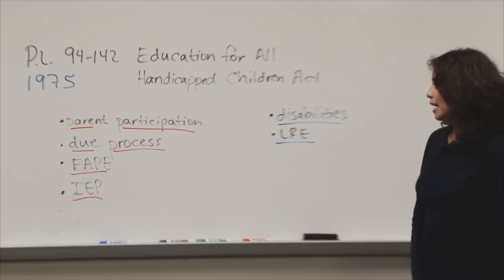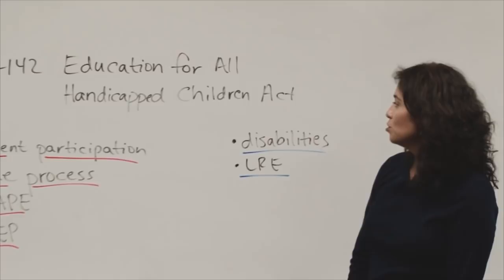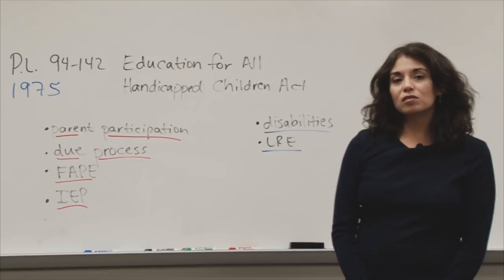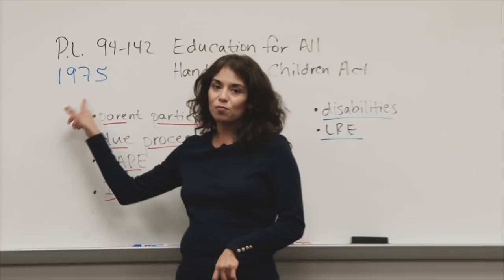Those four topics are part of the six principles that were established when the special ed law, PL 94-142, the Education for All Handicapped Children Act, was passed in 1975. This law set the stage for special ed as we know it — it set all the guidelines for special ed as a field, established right after the Civil Rights Movement.